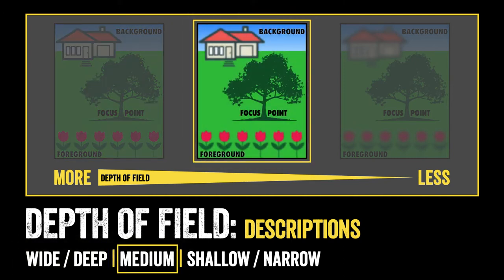A medium depth of field will have the focal point in focus, and some of the image will be slightly out of focus. In this case, the background and the foreground — the house and the flowers in the front — have been slightly blurred to mimic a medium depth of field. One thing you should notice between this image and the last is that the focal point of the tree now becomes a little bit more prominent in the image.